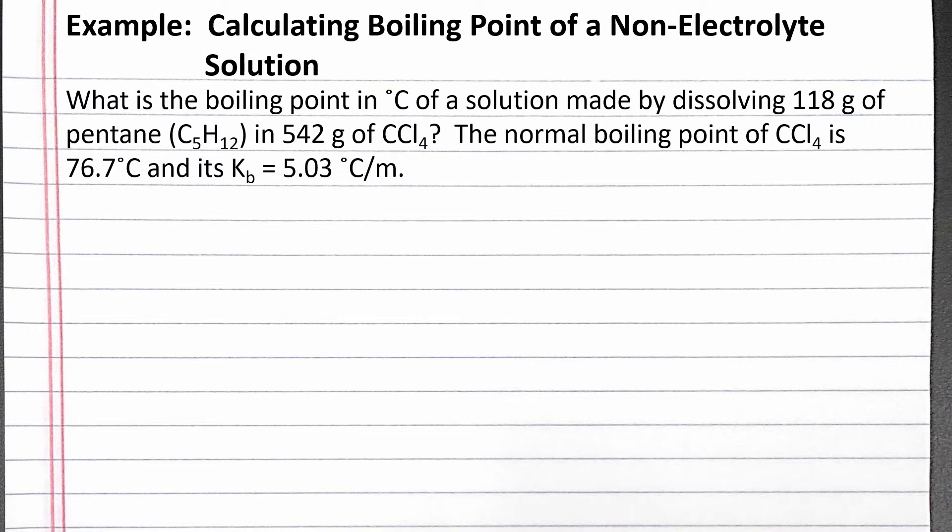Our problem reads: What is the boiling point in degrees Celsius of a solution made by dissolving 118 grams of pentane (C5H12) in 542 grams of carbon tetrachloride? The normal boiling point of CCl4 is 76.7 degrees Celsius, and its boiling point elevation constant Kb is 5.03 degrees Celsius per molal.